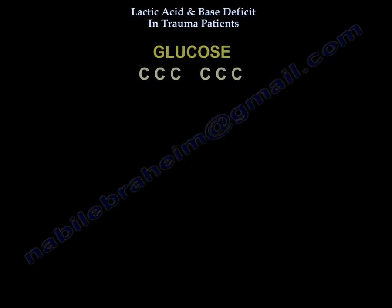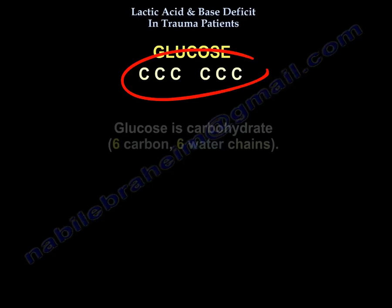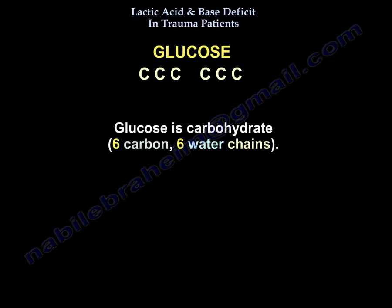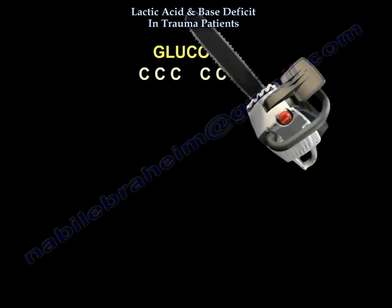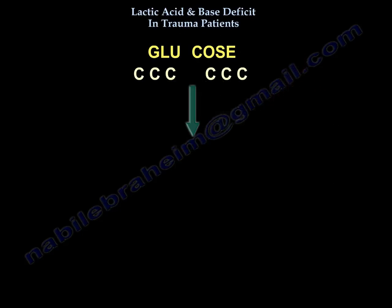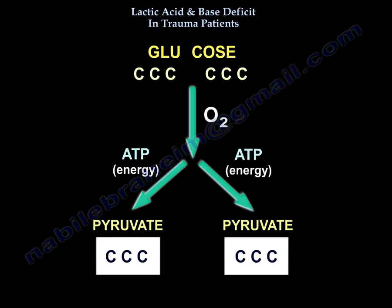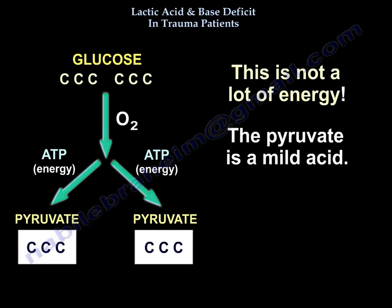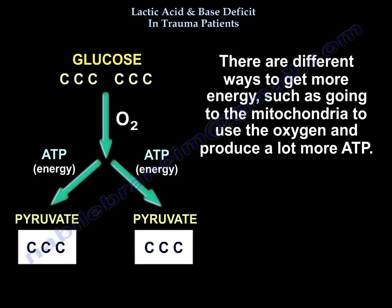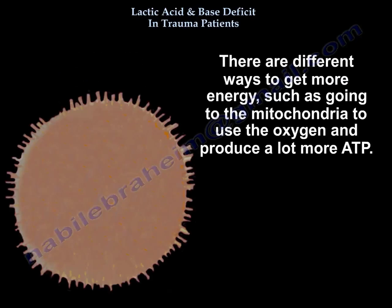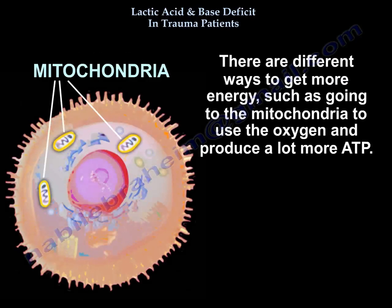If we take glucose — six carbon molecules — and go through aerobic metabolism, we break down the glucose into two pyruvates, each a three-carbon molecule, and produce two ATP. That's not a lot of energy, and pyruvate is a mild acid. There are different ways to get more energy, like going to the mitochondria and using oxygen to produce a lot more ATP.